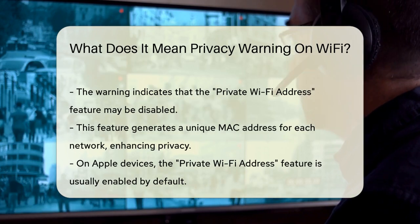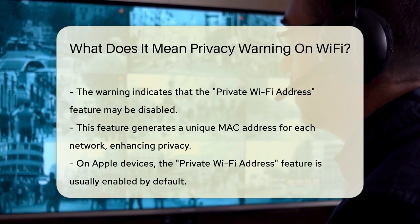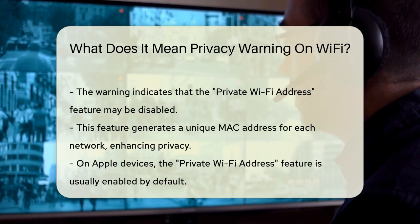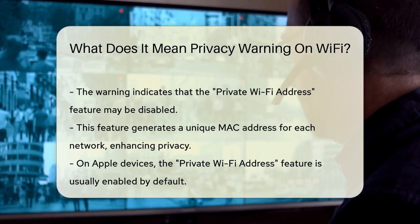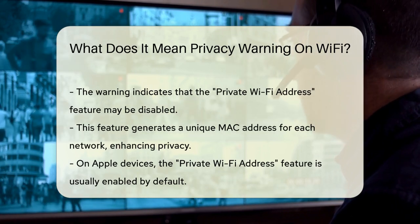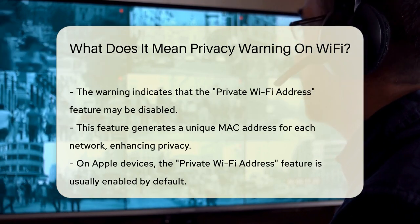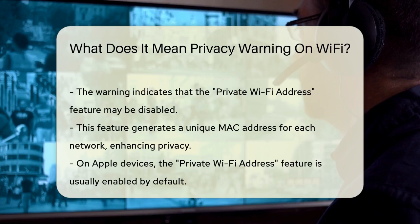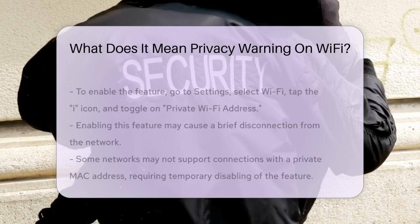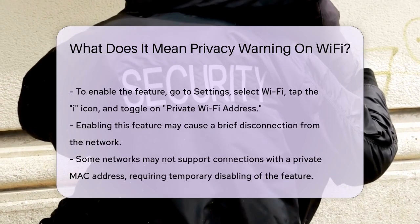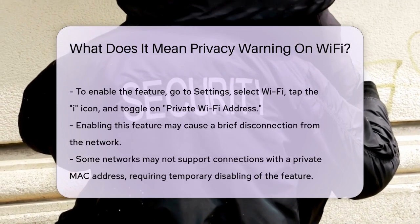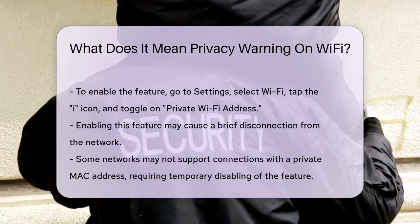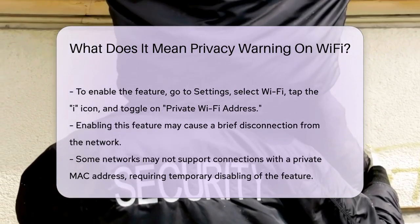To fix this, you can easily enable the Private Wi-Fi Address feature on your Apple device. Here's how: open the Settings app, go to Wi-Fi, select the network you're connected to by tapping the eye icon next to it, and then toggle on Private Wi-Fi Address.